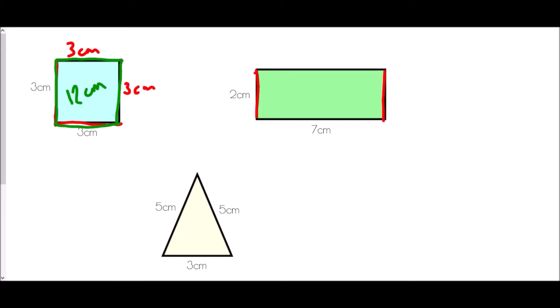For a rectangle, the rule is that opposite sides are of equal length. So if this side is two centimeters, the right-hand side must also be two centimeters. If the bottom is seven centimeters, then the top is also seven centimeters. Walking around the shape: two plus seven is nine, plus two is eleven, plus seven is eighteen centimeters.